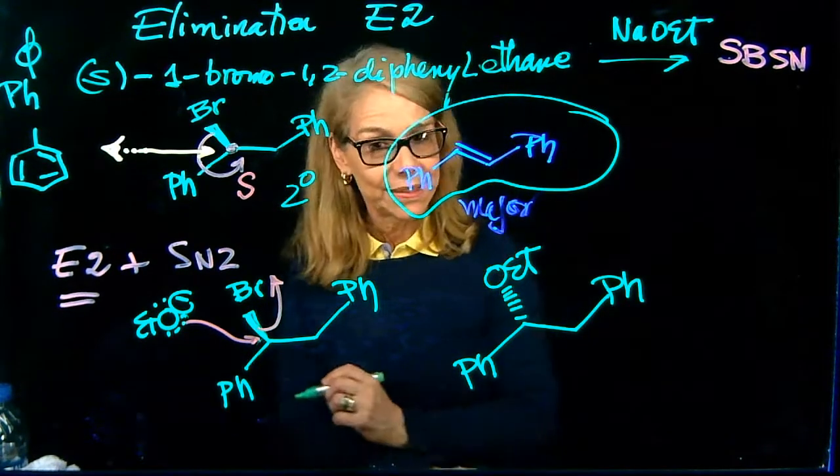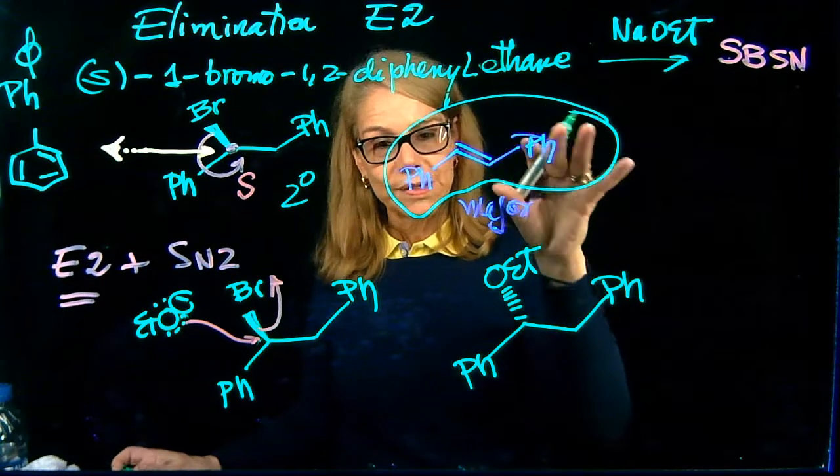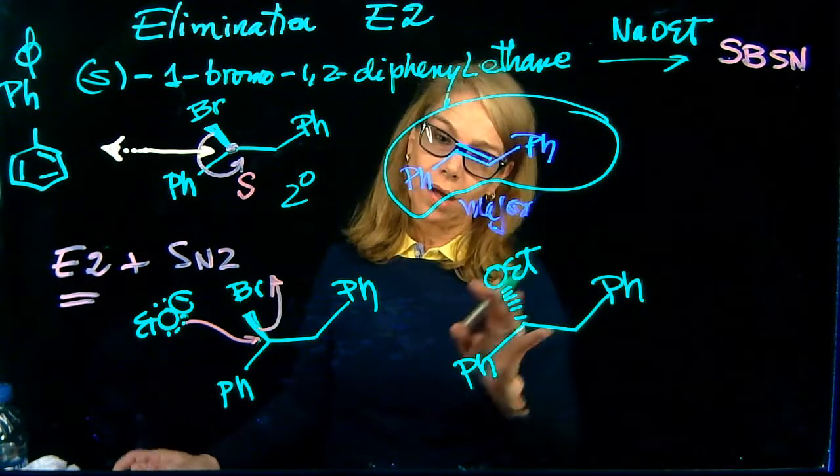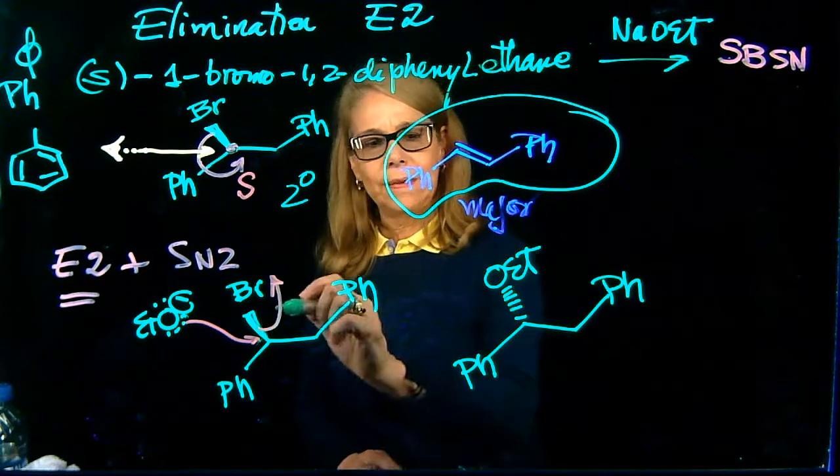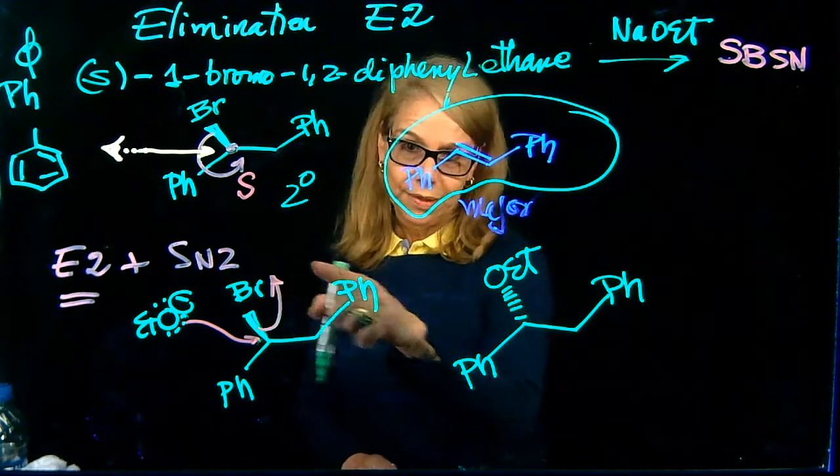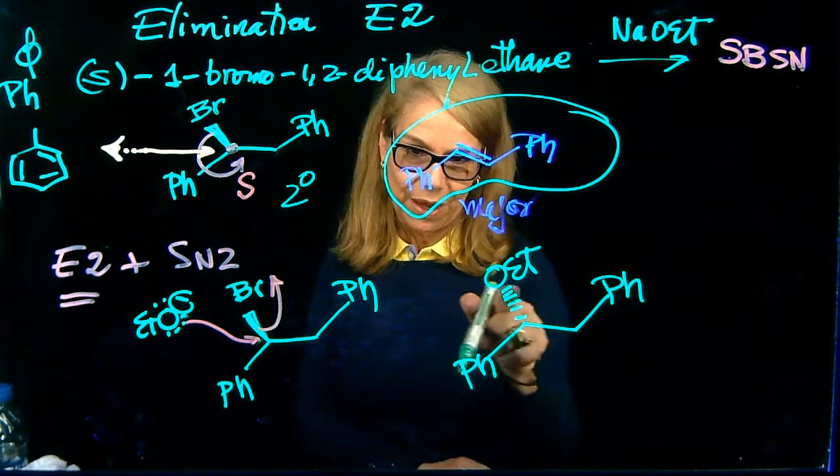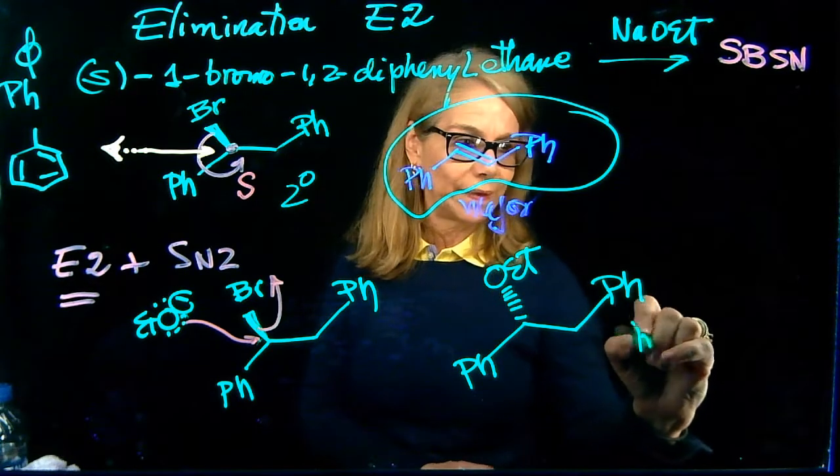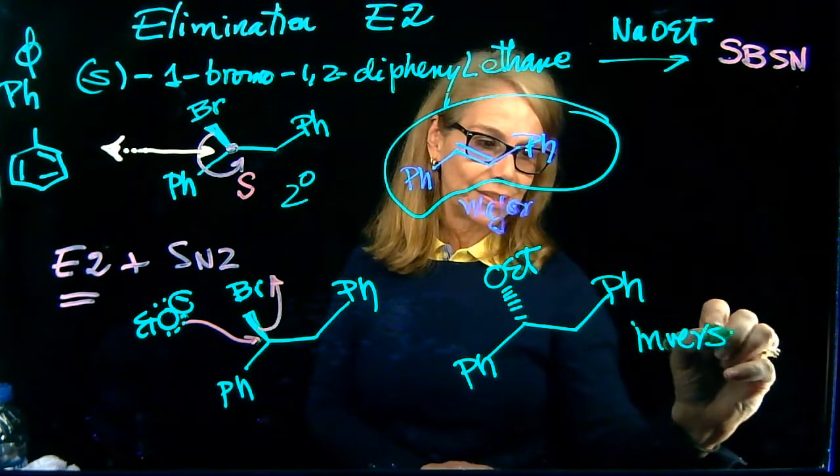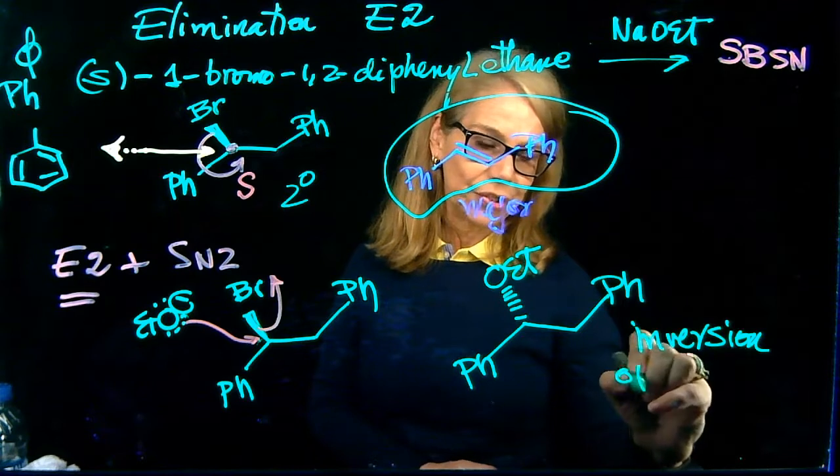And we said, why? We explained it because it forms through the more stable conformation. And the minor product will be the substitution product. With, remember, always happens with inversion of configuration of the alpha carbon.